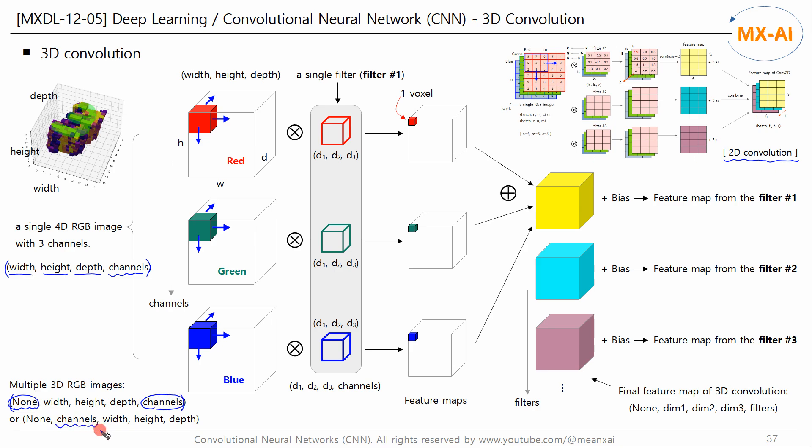Channels can be placed in the second dimension of an array, but are typically placed in the last dimension. A 4D image cannot be represented in three-dimensional space, but can be depicted with multiple 3D images for each RGB channel, as follows.